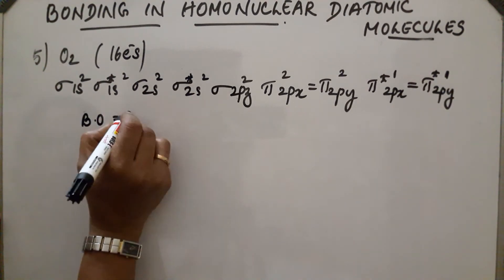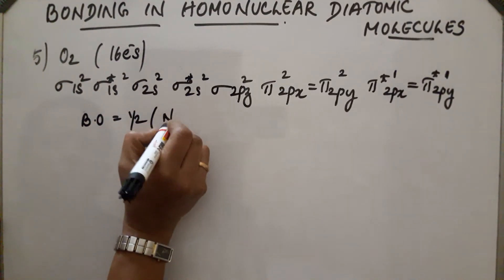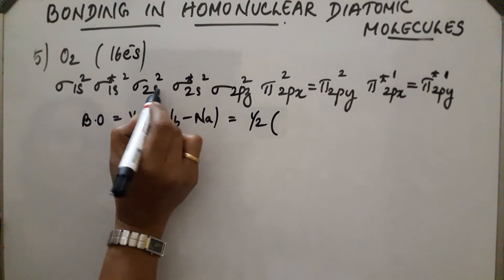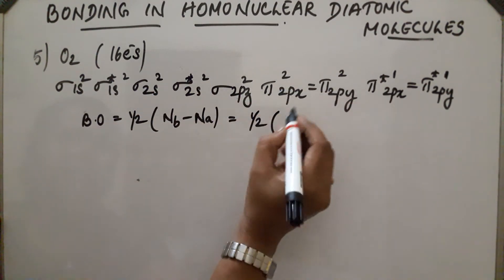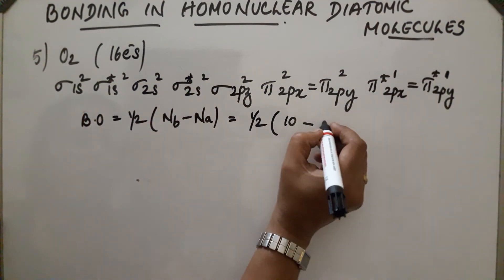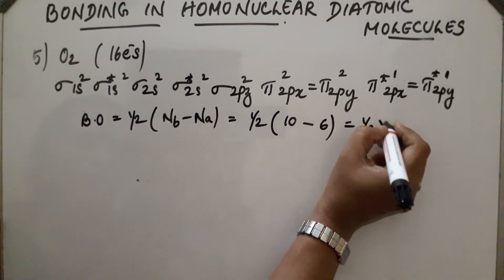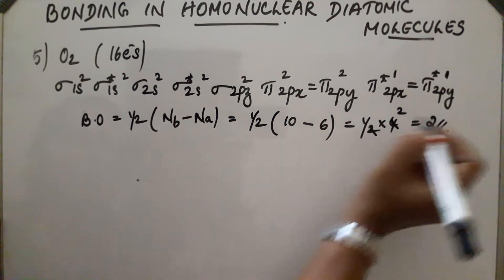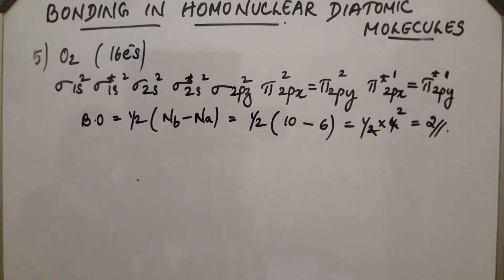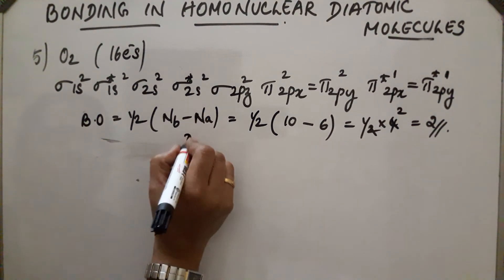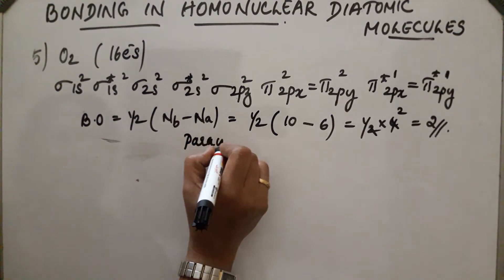Bond order for O₂ = 1/2 into (Nb minus Na) = 1/2 into (10 minus 6) = 1/2 into 4 = 2. This means O₂ has a double bond — O=O. The molecule is paramagnetic, and this paramagnetic property has also been experimentally proven.